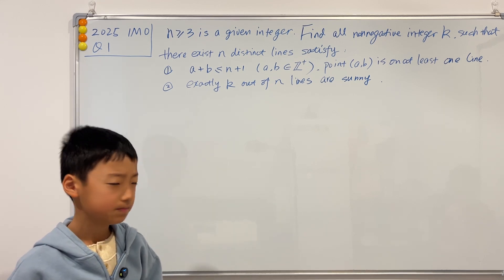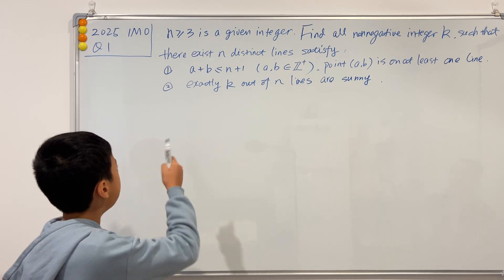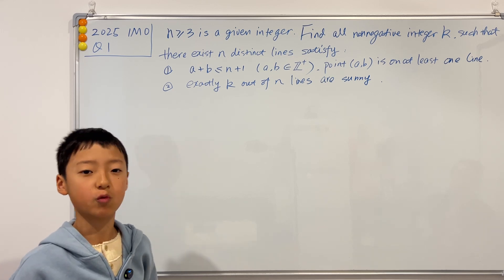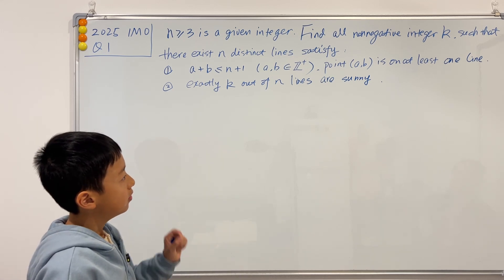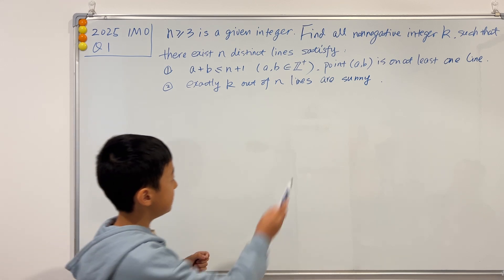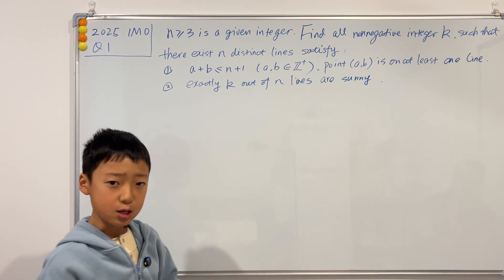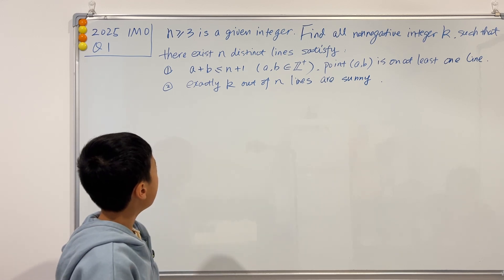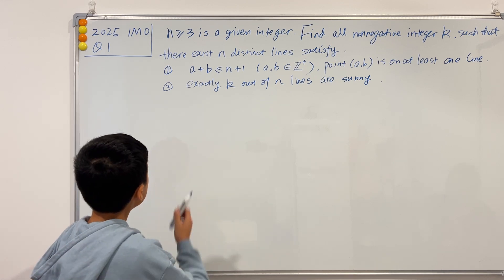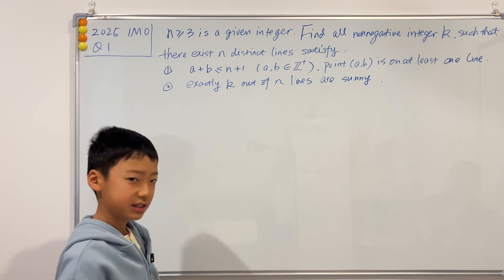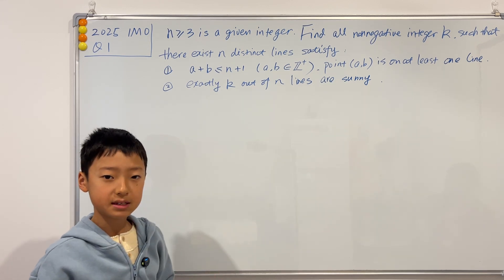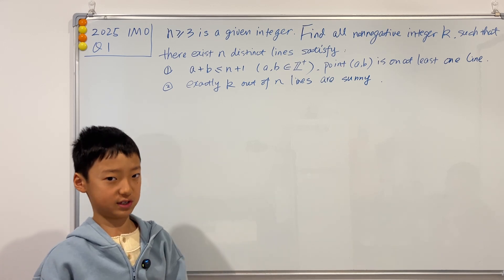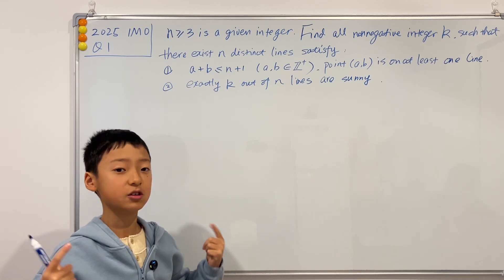Back to the question. I don't really like the first condition — I think it's a bit hard to understand. So why don't we try and reword it? The part that is confusing is that the point (a, b) is on at least one line. If we rephrase this, we see that all of these n lines must pass through all of the dots. I think that makes it a bit easier to understand.